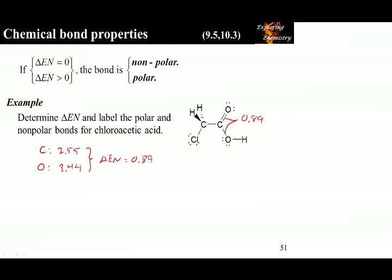What you should have calculated is that the carbon-hydrogen bonds have a difference in electronegativity of 0.35. The carbon-chlorine bond has an electronegativity difference of 0.61. The carbon-carbon bond has an electronegativity difference of zero. And the oxygen-hydrogen bond has an electronegativity difference of 1.24. With the exception of the carbon-carbon bond, all of the other bonds are polar.